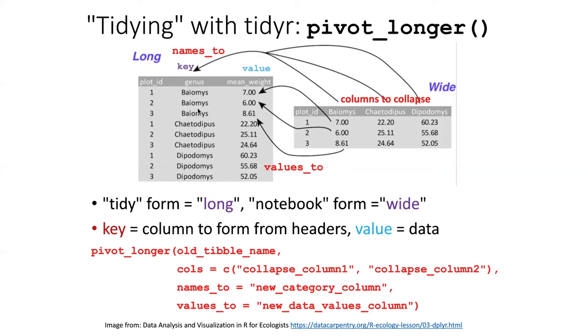So the format of the statement for pivot_longer is like this. The first thing that you do is put the name of the tibble that you are drawing the data from, and then you have to list the columns in the form of a vector. So in this particular case, we would list these three columns here.